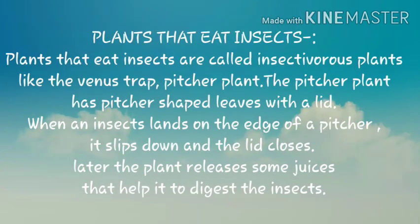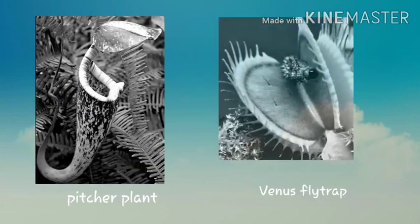Next, plants that eat insects. Plants that eat insects are called insectivorous plants, like the Venus flytrap and pitcher plant. The pitcher plant has pitcher-shaped leaves with a lid. When an insect lands on the edge of the pitcher, it slips down and the lid closes. Later, the plant releases some juice that helps it to digest the insect.